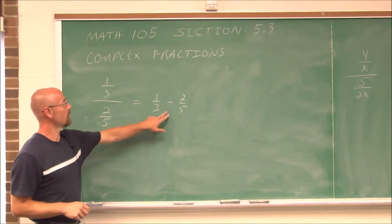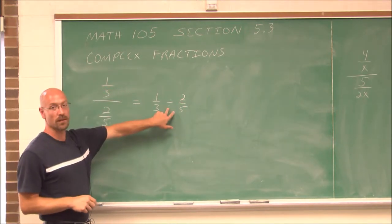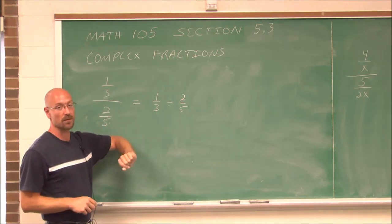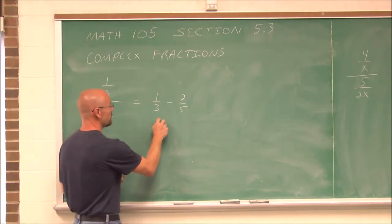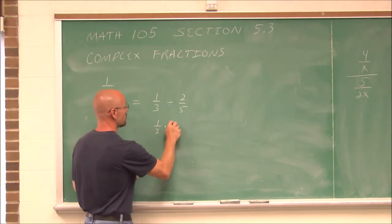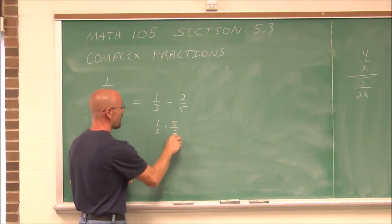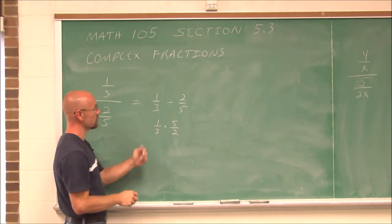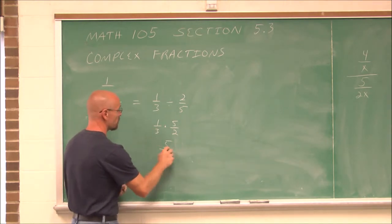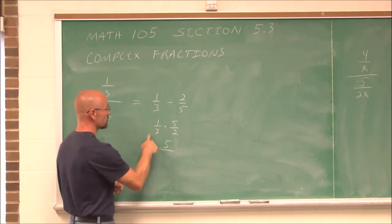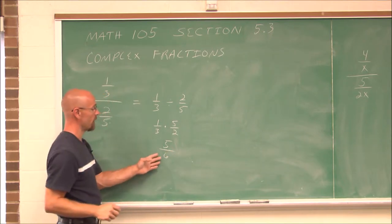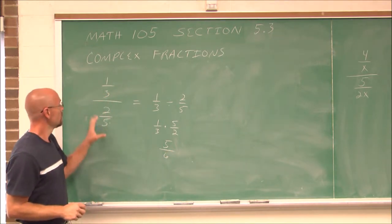And if we recall, to do this, we would just multiply by the reciprocal. If we did that — 1/3 times 5/2 — nothing simplifies. So we just multiply the numerators and the denominators, and we get 5/6.